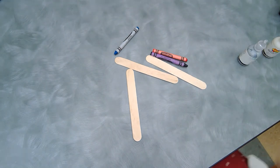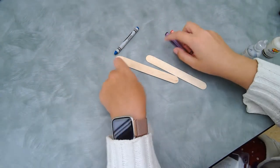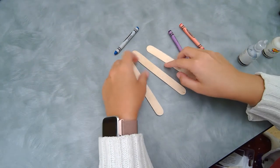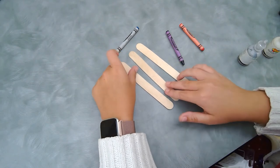So for our lightsaber bookmarks, the supplies we'll need are popsicle sticks. I'm going to be making three just so you can see how cool they can be.